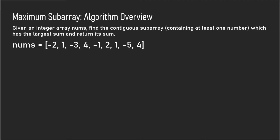In Kadane's algorithm, each subarray you're inspecting would essentially be similar to a sliding window. You would first start with just negative 2 as the subarray you're inspecting. You have a current sum, so the current sum of this subarray would just be negative 2, and you have a global sum — that global sum right now is also negative 2 because that's the only sum we currently have.